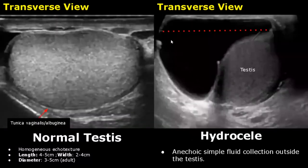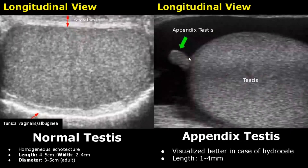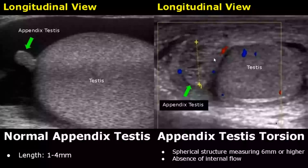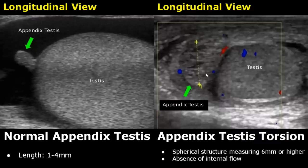In a hydrocele there is an anechoic fluid collection seen outside the testis, and you can also notice posterior acoustic enhancement. Appendix testis is an accessory testicular tissue found between the upper pole of the testis and the head of the epididymis. It is more easily visualized when there is a hydrocele and can measure one to four millimeters in length. In torsion of appendix testis it is enlarged and can measure six millimeters or more, with absence of internal flow on Doppler.